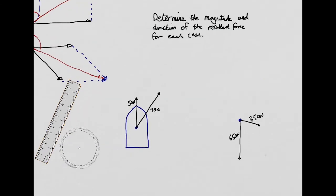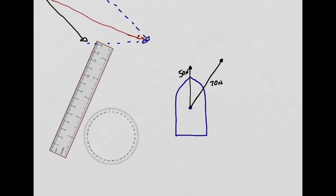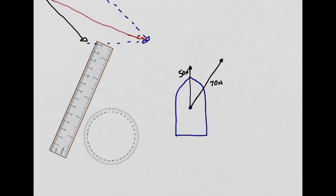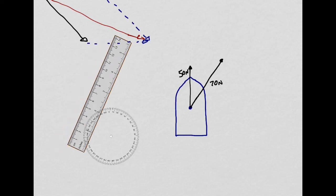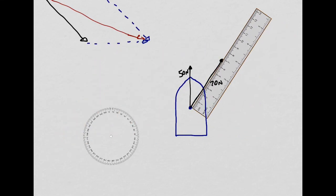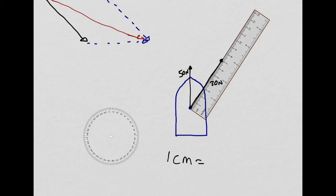Determine the magnitude and direction of the resultant force for each case. Let's start with this boat — I've got 50 newtons in one direction and a 70 newton force acting the other way. Firstly, I'm going to work out the scale factor. That arrow is 70 newtons and measures about seven centimetres, so the scale factor is one centimetre equals 10 newtons. I'm going to move that 70 newton arrow so that it's top and tail with the 50 newton arrow.